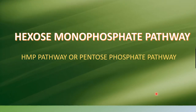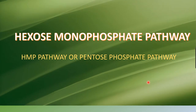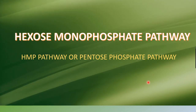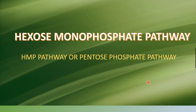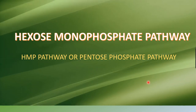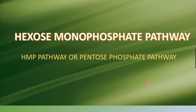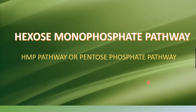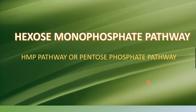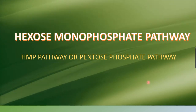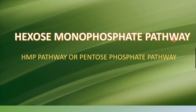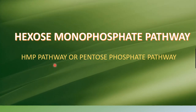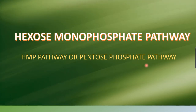Hi everyone. Now we are going to discuss the hexose monophosphate pathway. As we have already discussed, glycolysis — the breakdown of glucose — occurs via three pathways: the EMP pathway, HMP pathway, and ED pathway. We had gone through the EMP pathway and ED pathway in another part, and in this part we are going to discuss the hexose monophosphate pathway, also called the HMP pathway or pentose phosphate pathway.